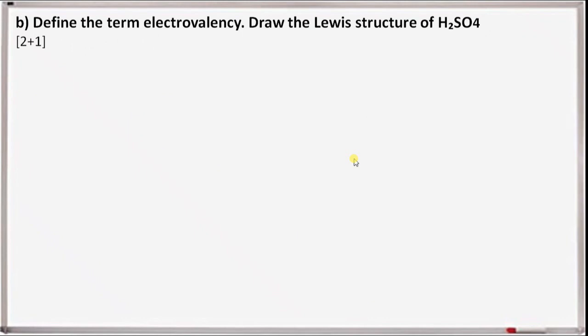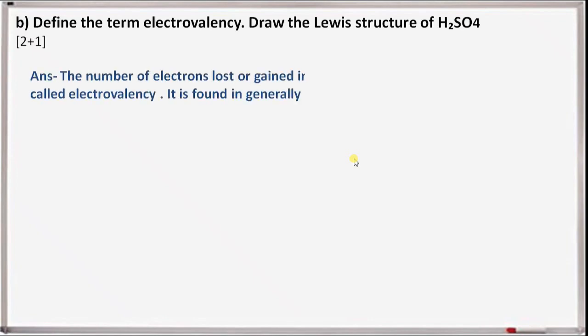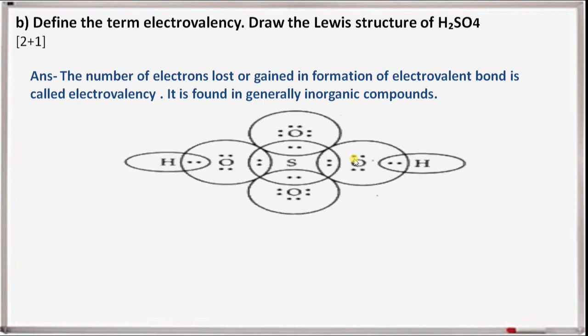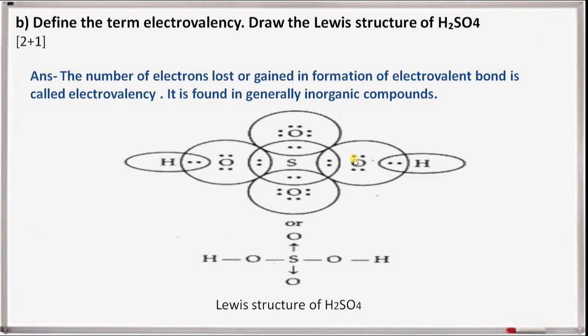Next question 10b: define the term electrovalency and draw the Lewis structure of sulfuric acid. The number of electrons lost or gained in the formation of an electrovalent bond is called electrovalency. It is found generally in inorganic compounds. In sulfuric acid, sulfur forms coordinate bonds with two oxygen atoms and covalent bonds with two other oxygen atoms. These two oxygen atoms form single covalent bonds with hydrogen atoms, as shown in the Lewis structure diagram of sulfuric acid.